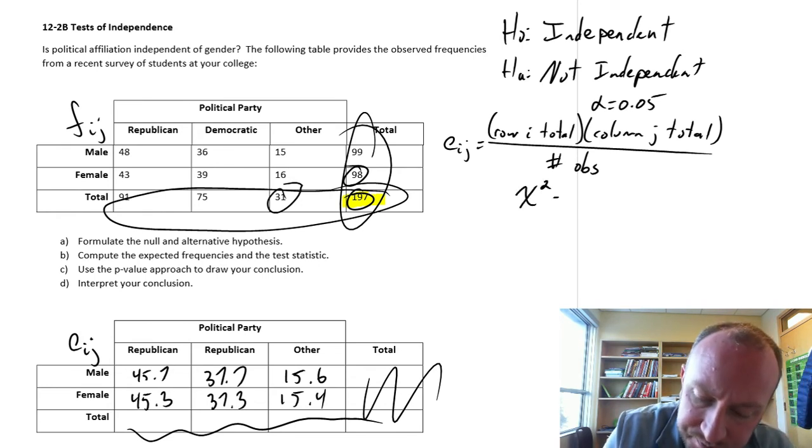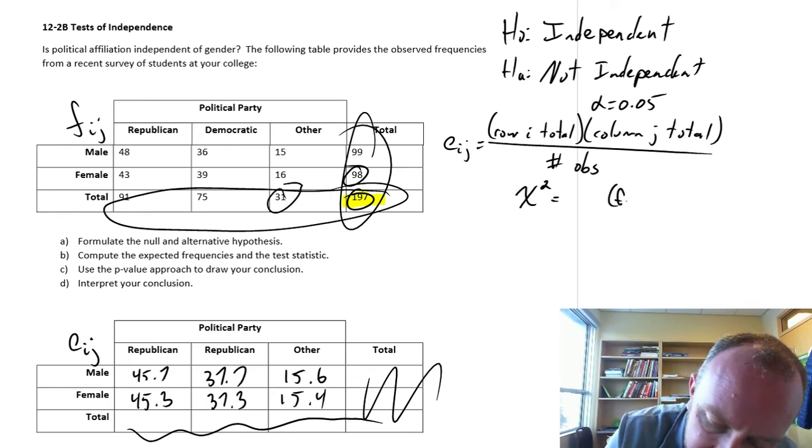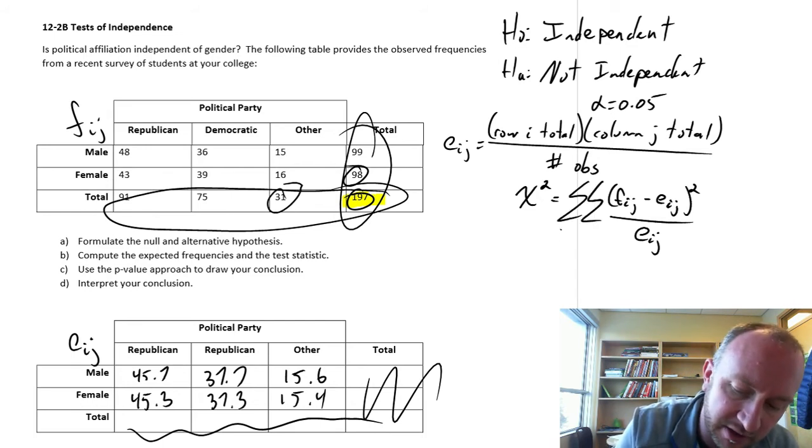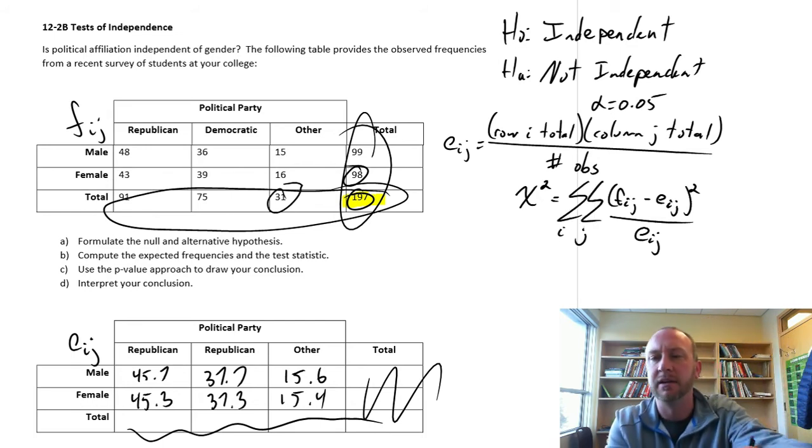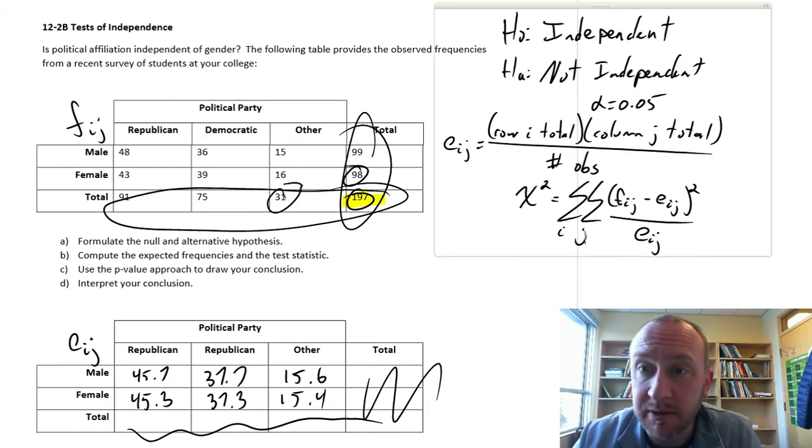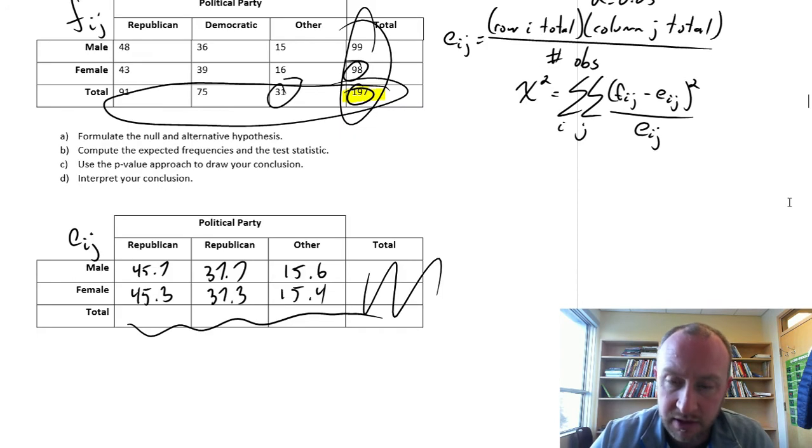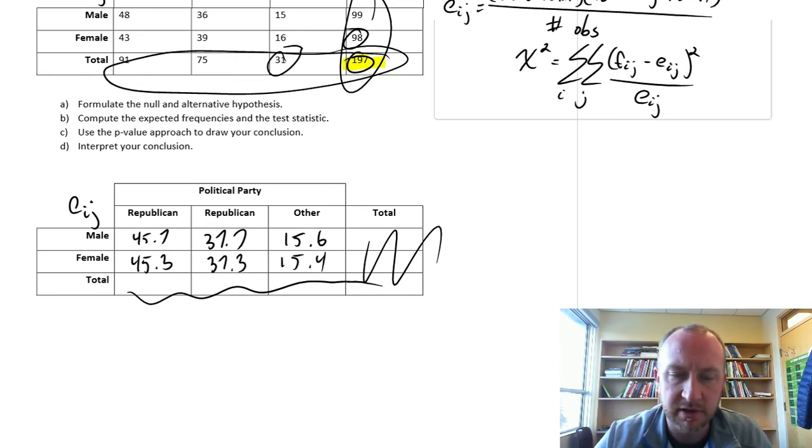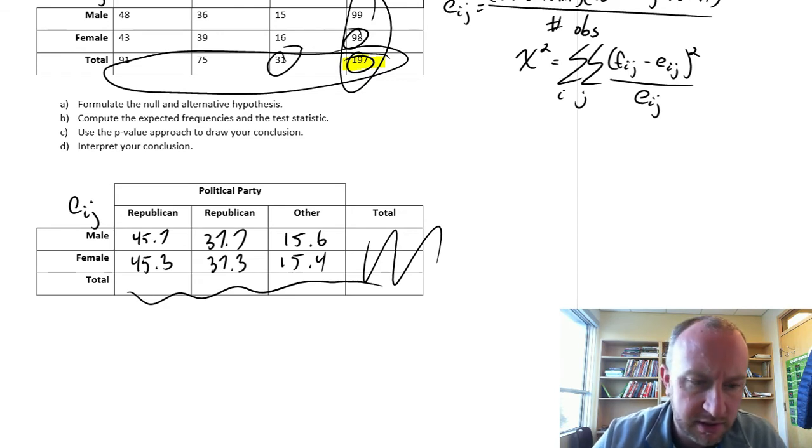For chi-squared, we need the differences between those observed values and the expected values, square them, divide by the expected value, and then add those across all columns and rows. It's the same formula we've seen in other exercises. Let me give myself some space here so I can see those observed frequencies.